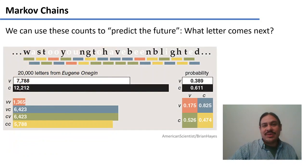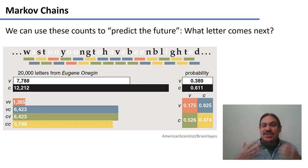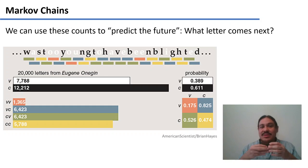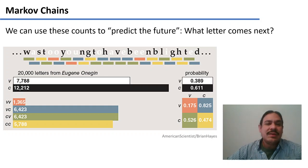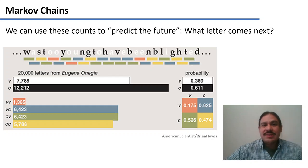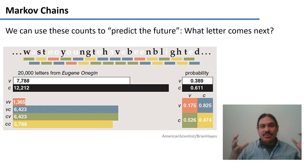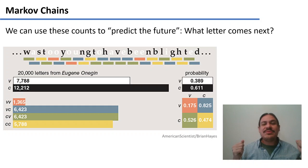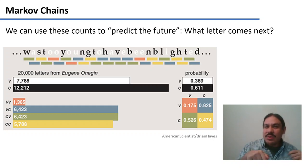Markov tried to figure out that with these counts, we could see in general: if you're standing on any consonant, what's going to happen next — a vowel or another consonant? He first just counted the sounds. Eugene Onegin has about 12,000 consonants and about 7,800 vowels. From there, if you landed on any random point of Eugene Onegin, the probability of landing on a consonant is about 61%, and the probability of landing on a vowel is about 39%.